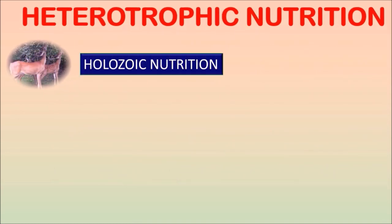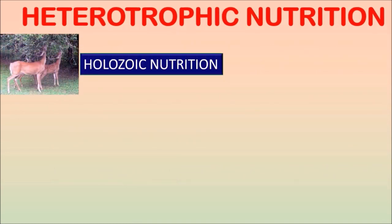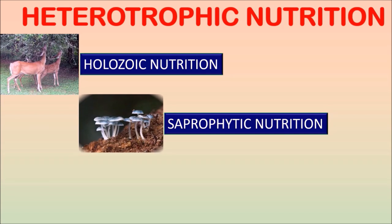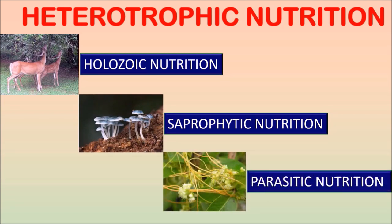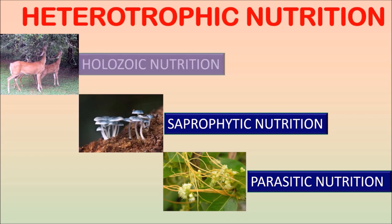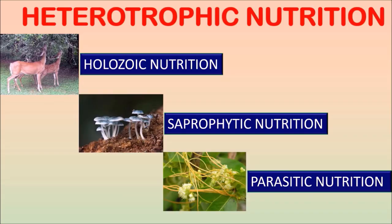Heterotrophic nutrition: Some organisms obtain food from other organisms — that means they depend on others for food. Such a mode of nutrition is known as heterotrophic nutrition. It is of three types: holozoic nutrition, saprophytic nutrition, and parasitic nutrition.